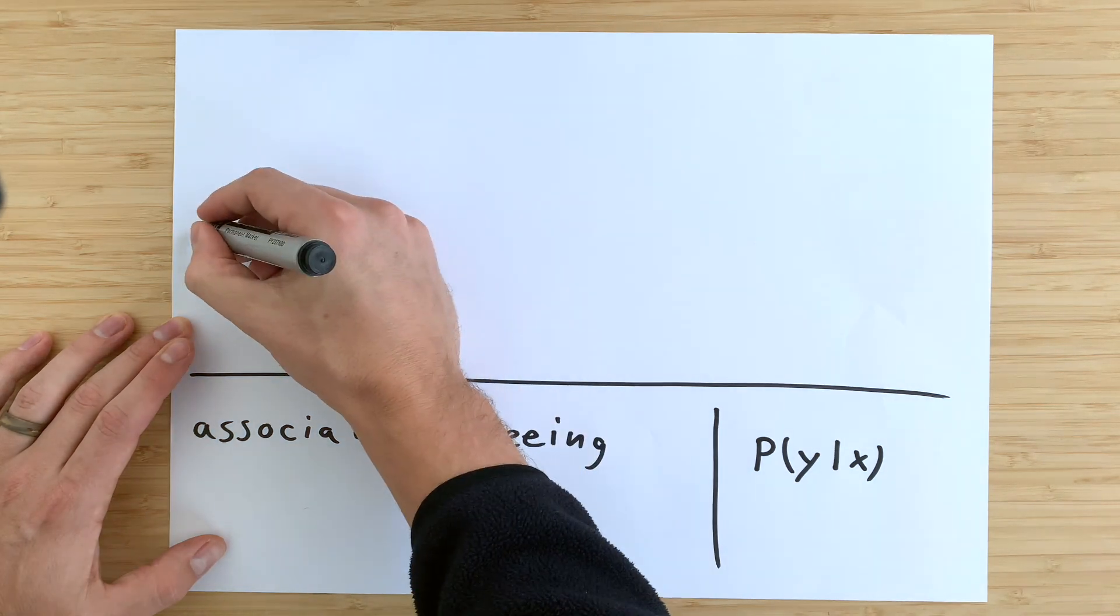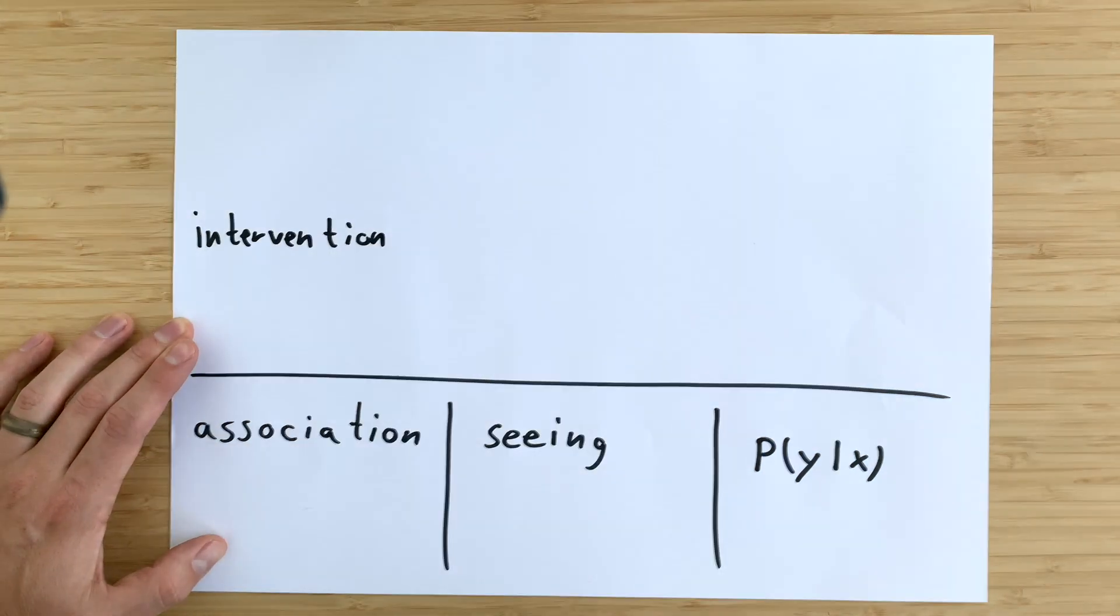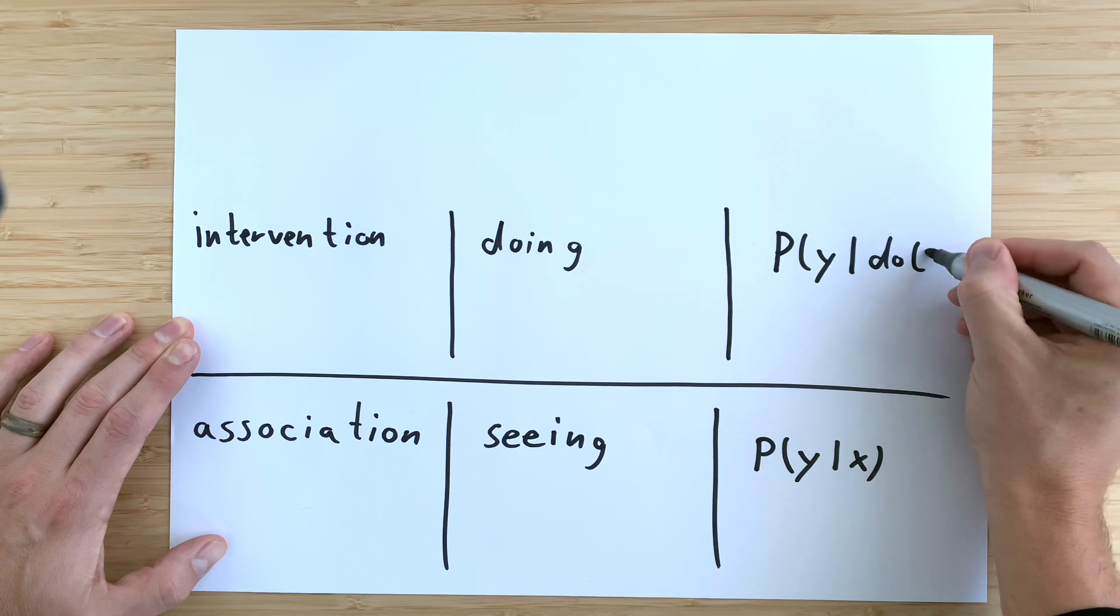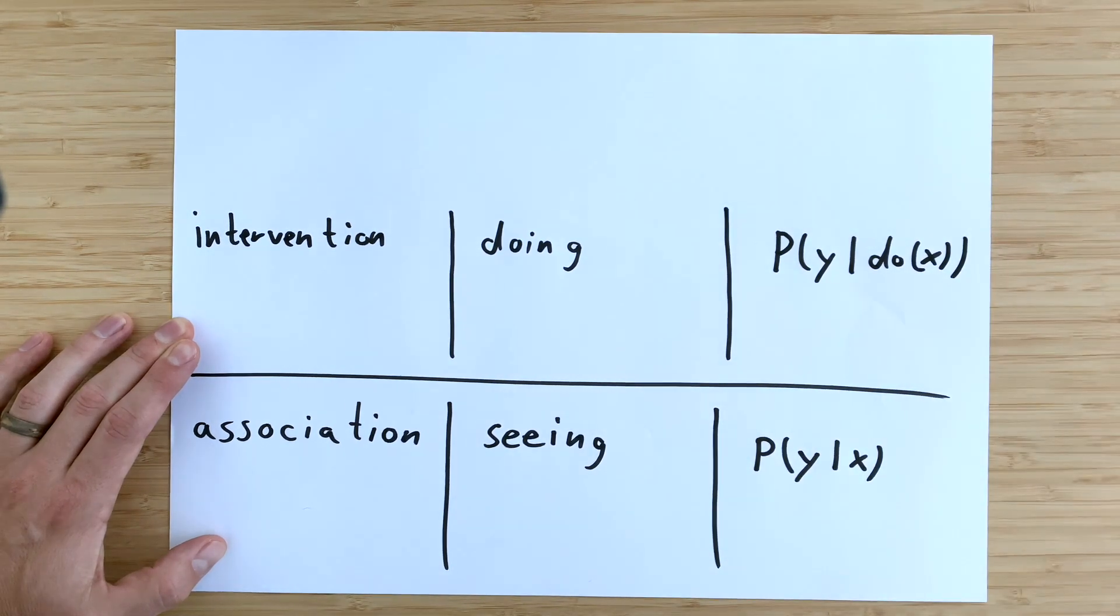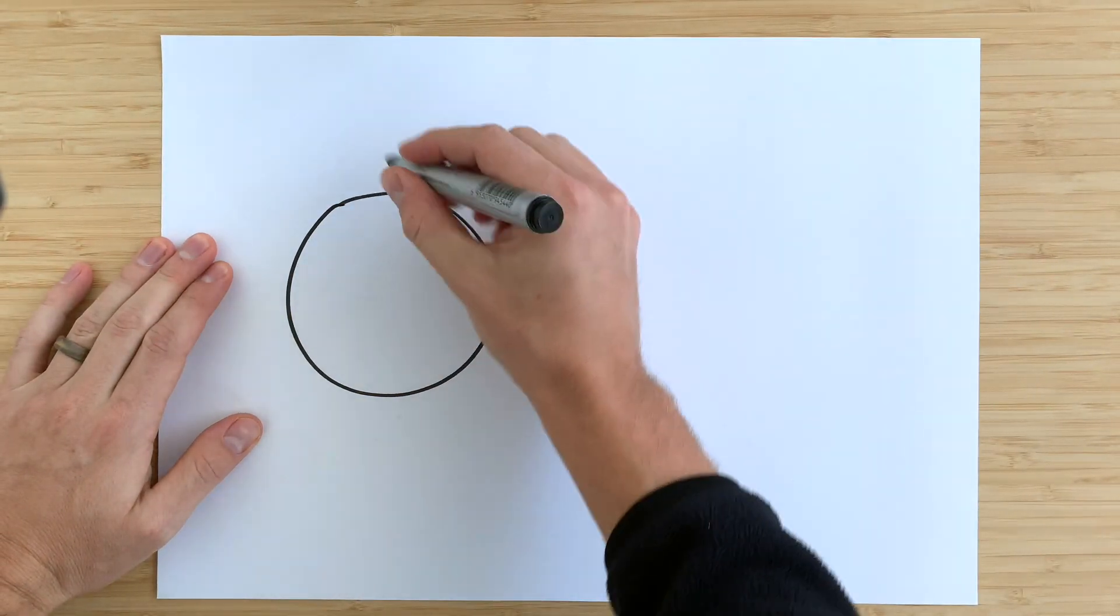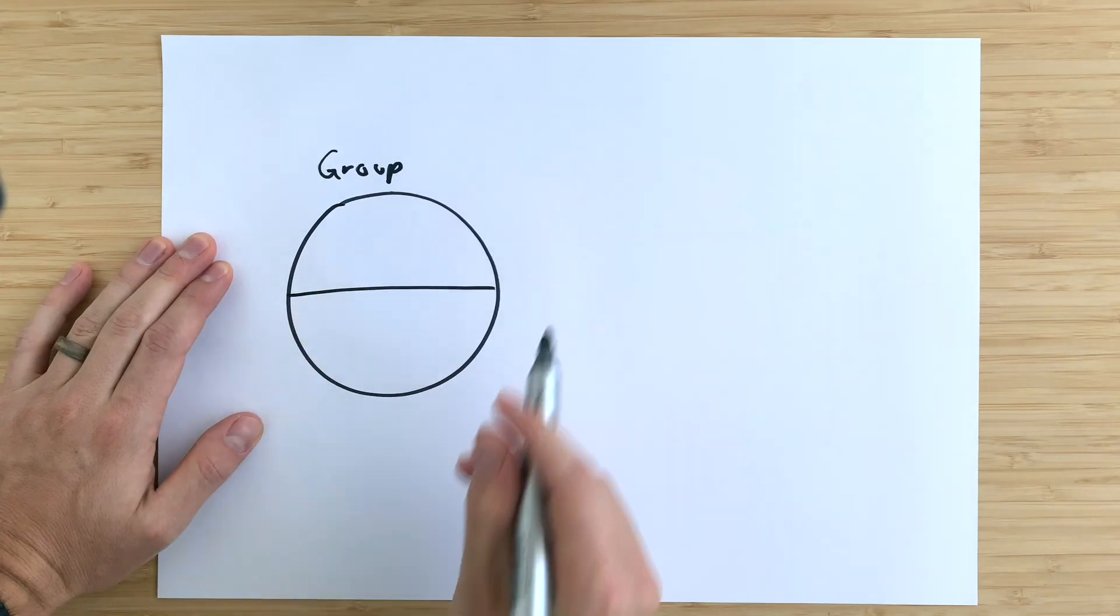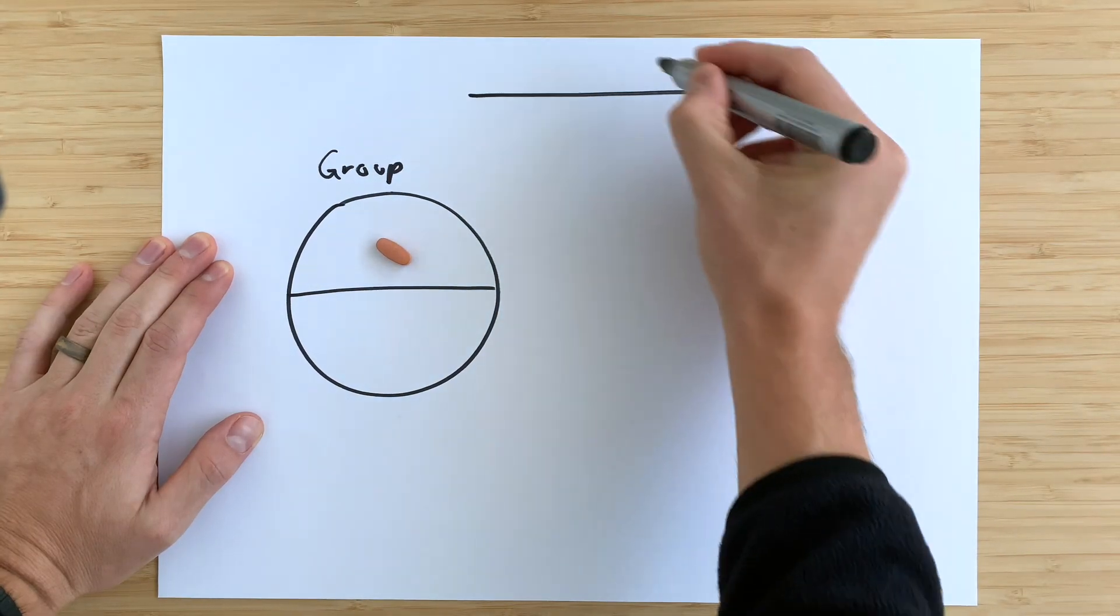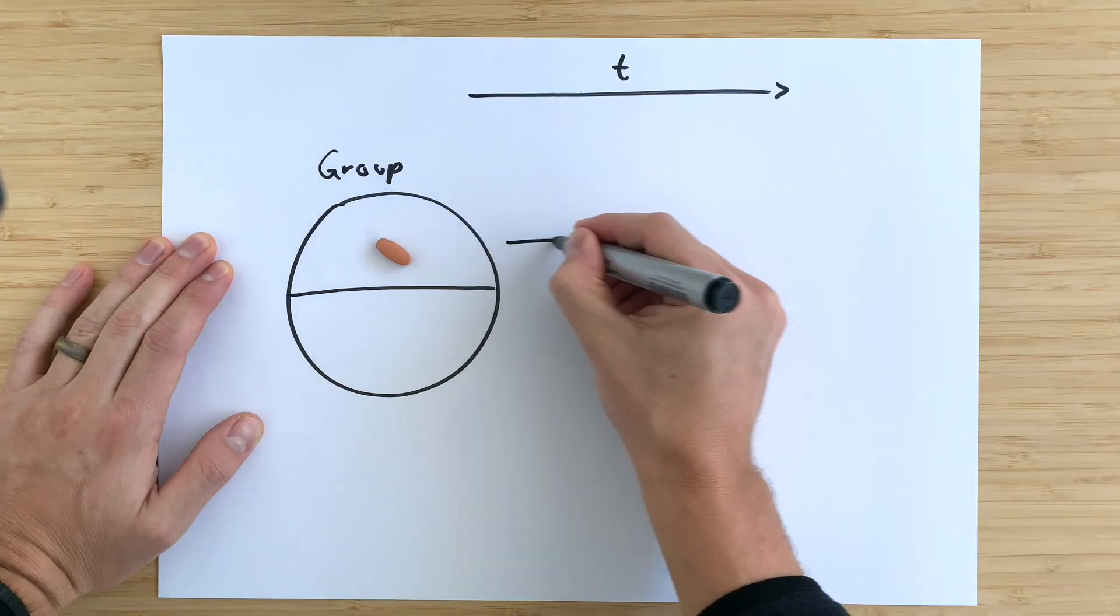The second level is intervention. It is about what we do. Imagine we're testing the effect of a drug and we give it to only half of a group of people. We can observe the effect of that drug in comparison to the group that didn't receive it.